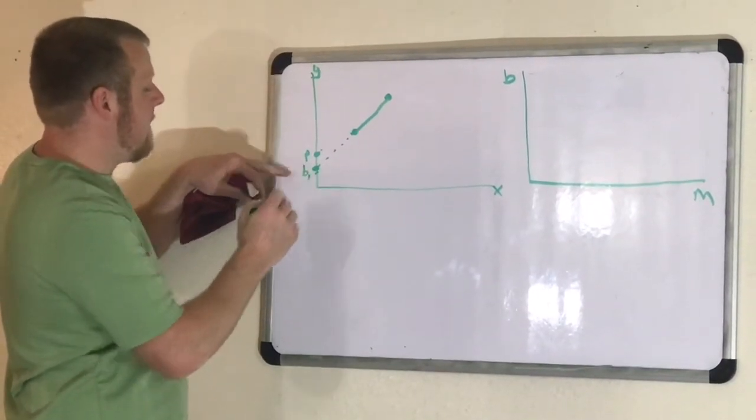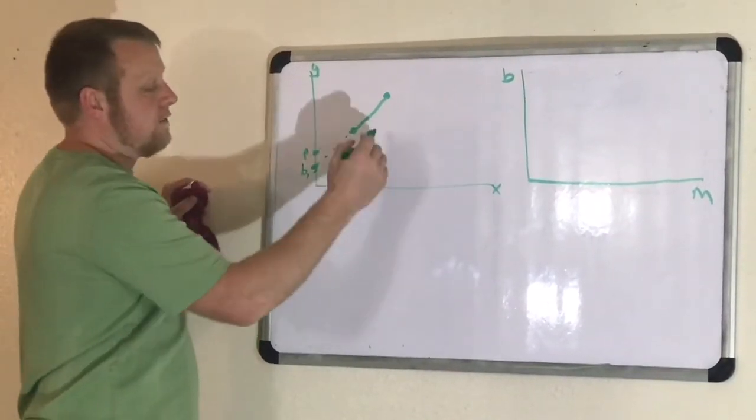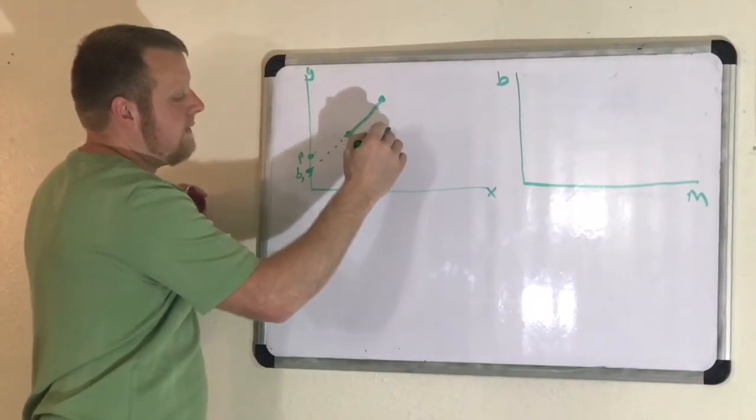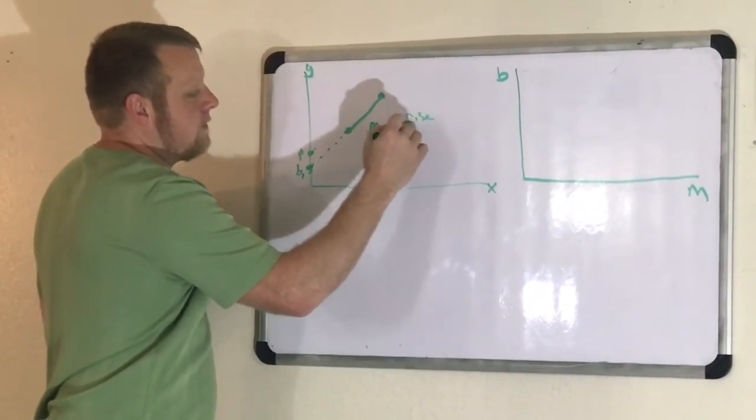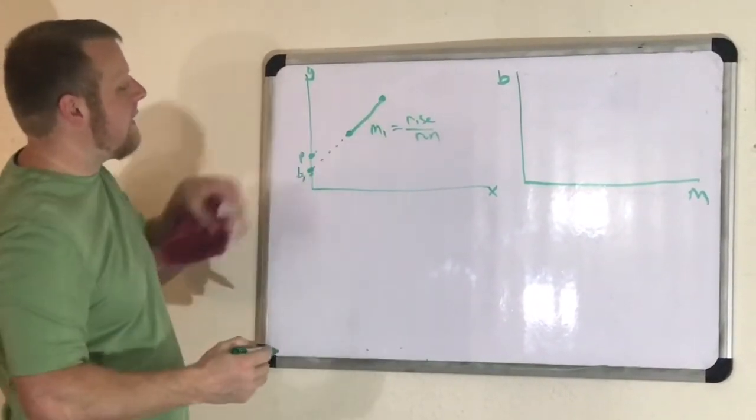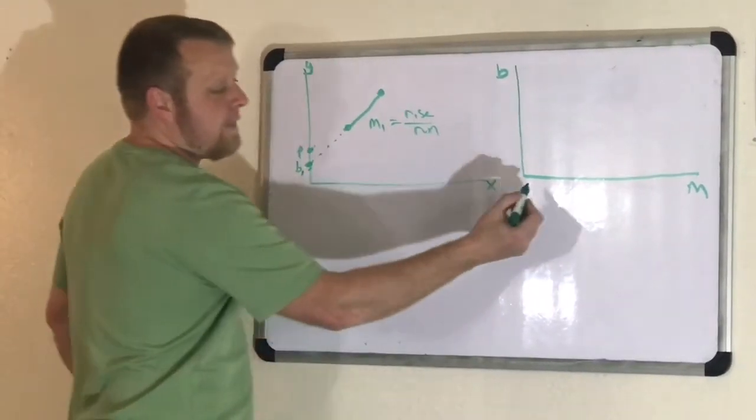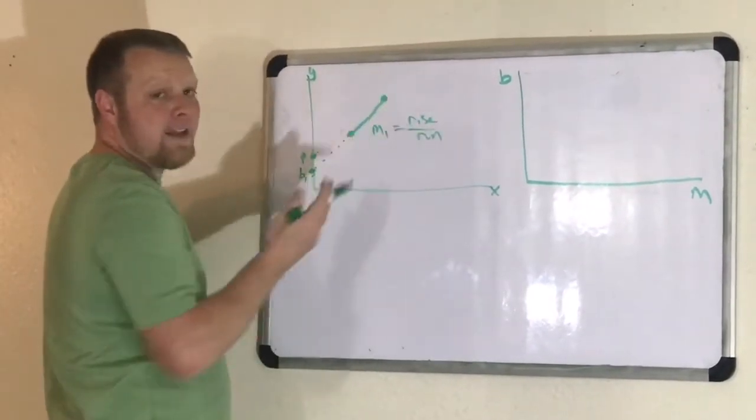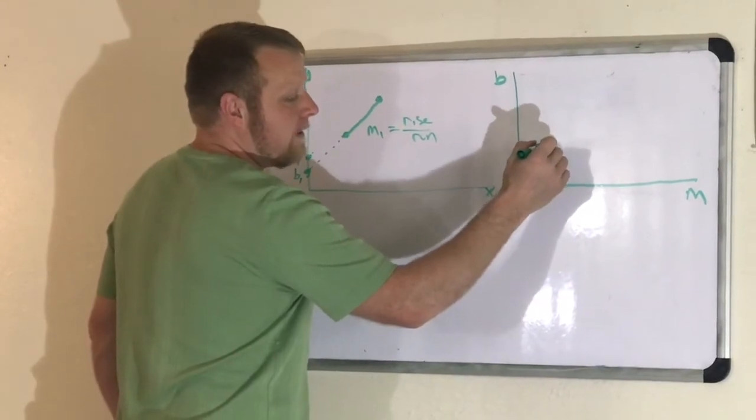Say we'll call it b1. And then we'll find the slope rise over run. We'll call that m1. So that's the rise over run as a slope of that. So it's m1. So we can plot that over here and say that line, that entire line, is nothing more than a point here.